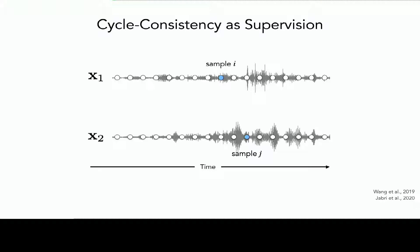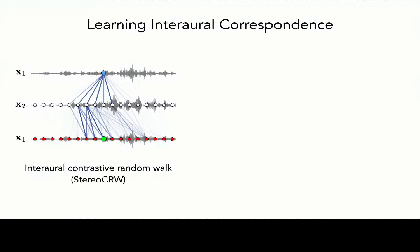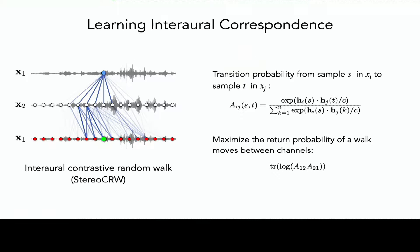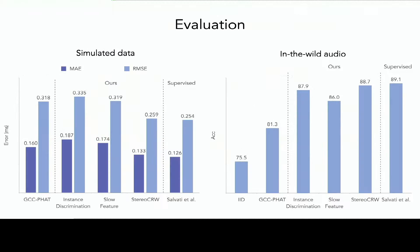Specifically, we use the idea of cycle consistency. We want a representation that lets us match the two waveforms left to right or right to left and end up with the same result. We use techniques like the contrastive random walk to achieve this: we learn a feature set that determines the transition probabilities for a random walk on a graph whose nodes correspond to different time steps of the waveforms. We want features such that this random walk is cycle consistent — you transition from the left channel to the right channel and back to the left channel and end up where you started. We train on lots of unlabeled music from the internet to learn these cycle-consistent audio representations.